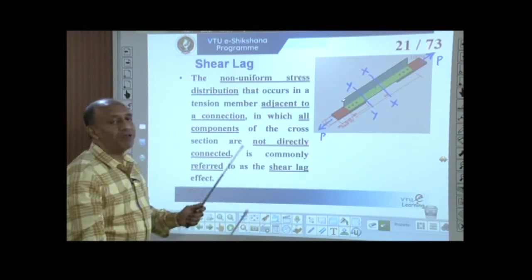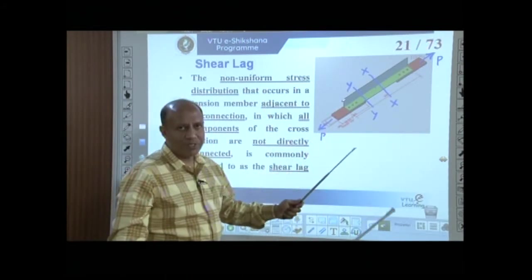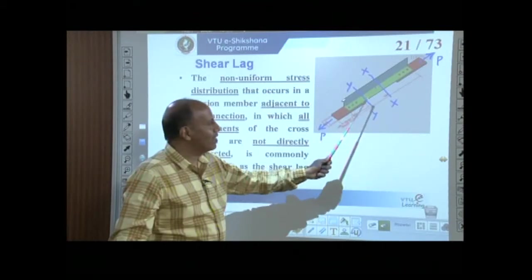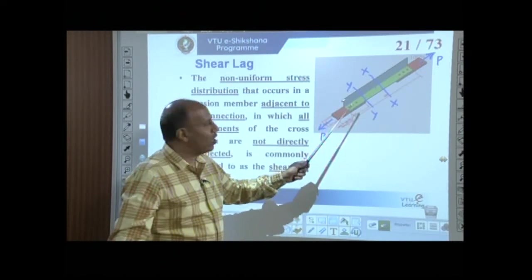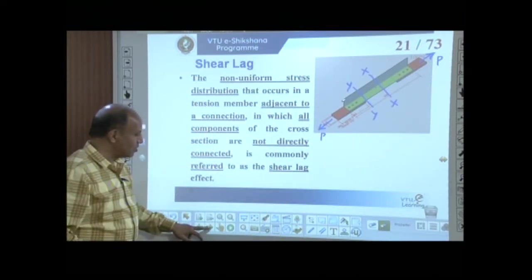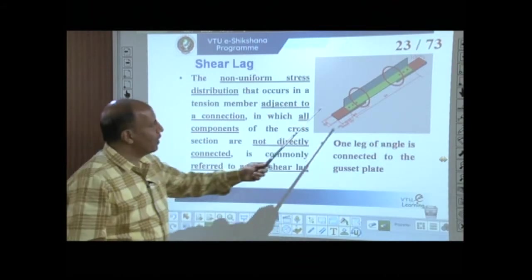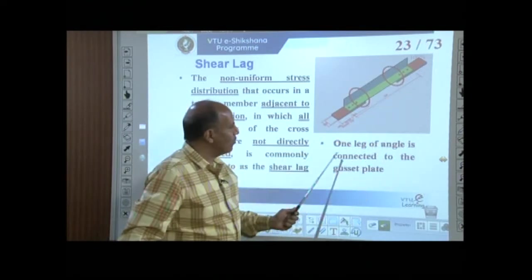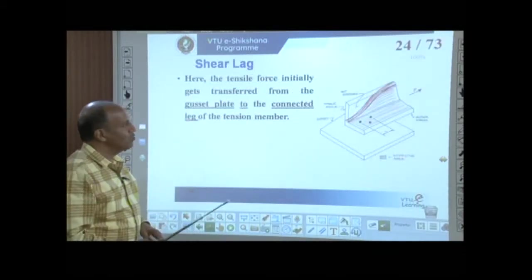In this case, only one leg of the angle is connected to the gusset plate while the other (outstanding) leg is unconnected. Near the end connection you can see that the connected leg is stressed over its entire length while the outstanding leg is only stressed in part of its length — the upper portion is not stressed at all. This non-uniform distribution is the shear lag effect visible in the transition zone.